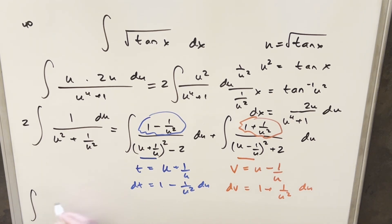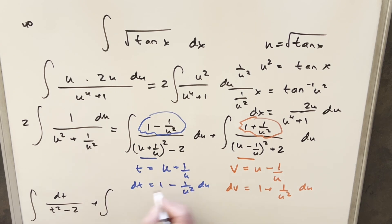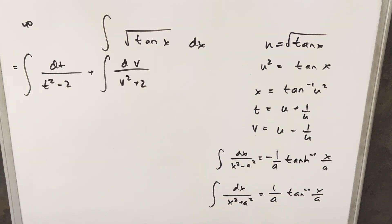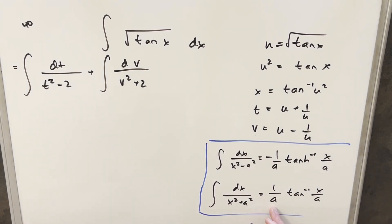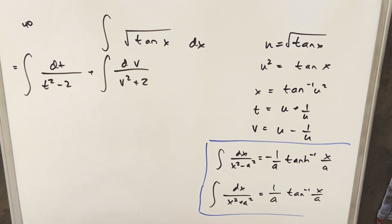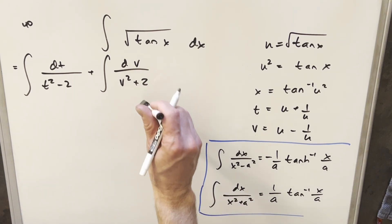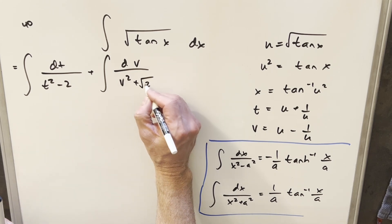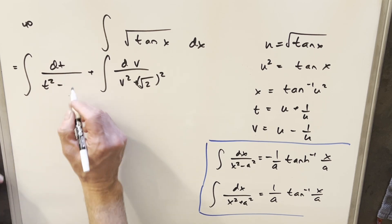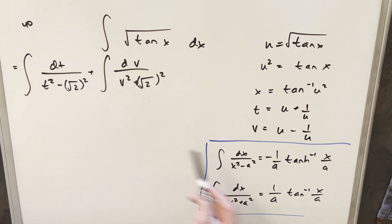So let's go ahead with these substitutions. For the first integral we get dt in the numerator, and the denominator becomes t squared minus 2. For the second integral we've got dv in the numerator, and the denominator becomes v squared plus 2. We have formulas we can use for each of these — you're probably more familiar with the arctan formula for the bottom one. For the top integral we use a similar formula involving the hyperbolic inverse. Before integrating I want to write 2 as square root of 2 squared in both cases, so our a value is just square root of 2.